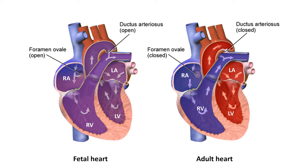Before we understand the fetal circulation, we need to understand the fetal heart. The fetal heart is completely different from the adult heart. We have two diagrams here — one is the fetal heart and the other is the adult heart. In the fetal heart, there is an opening between the right atrium and left atrium, called the foramen ovale. This opening is not found in the adult. We are also showing a duct connecting the pulmonary artery to the aorta, which we call the ductus arteriosus. This duct is not functional in the adult.